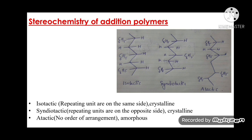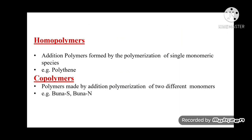Stereochemistry of addition polymers: when addition polymers are formed, molecules can exist in different stereochemical forms — isotactic, syndiotactic, or atactic polymers. Isotactic polymers have repeating units on the same side and are crystalline in nature. Syndiotactic polymers have repeating units on opposite sides and are also crystalline. Atactic polymers have no ordered arrangement and are amorphous in nature.